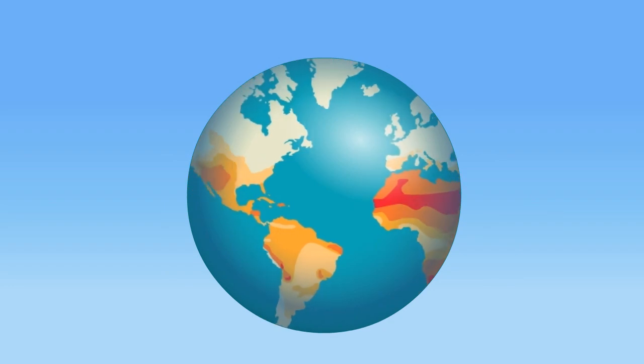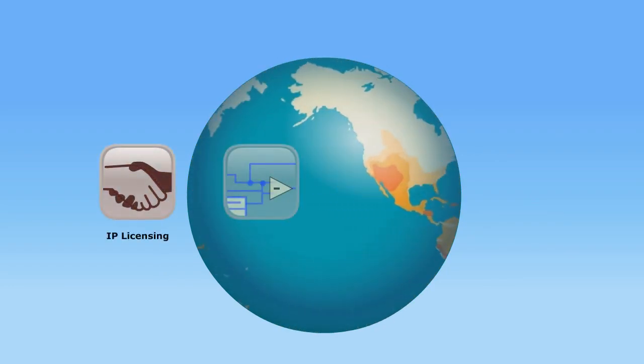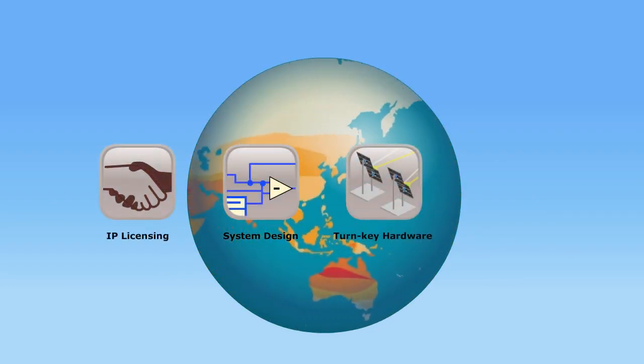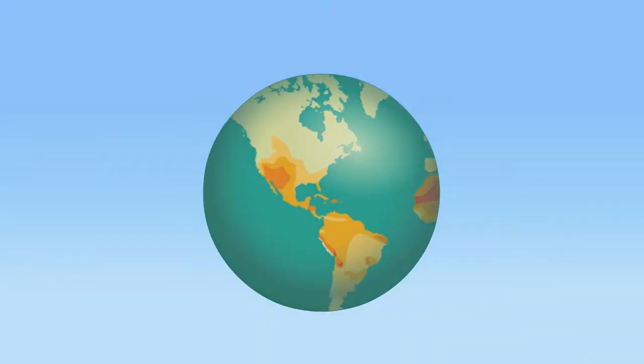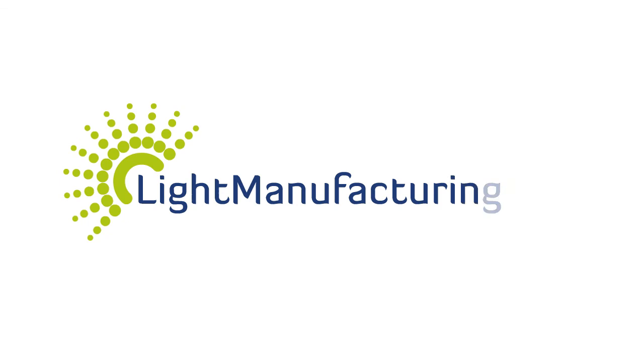Light Manufacturing provides IP licensing, system design, turnkey SRM hardware, and process analysis for clients around the globe. Whether you're a rotational molding equipment manufacturer, a plastic molder, or an NGO, Light Manufacturing is ready to work with you.